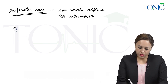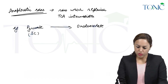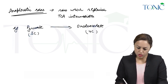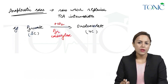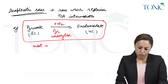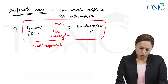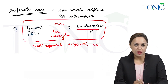For example, pyruvate gets converted to oxaloacetate. Pyruvate is a 3-carbon compound and oxaloacetate is a 4-carbon compound, so we have to add carbon dioxide here. The enzyme is pyruvate carboxylase. This is an anaplerotic reaction — in fact, this is the most important anaplerotic reaction, because oxaloacetate is very important for the TCA cycle.